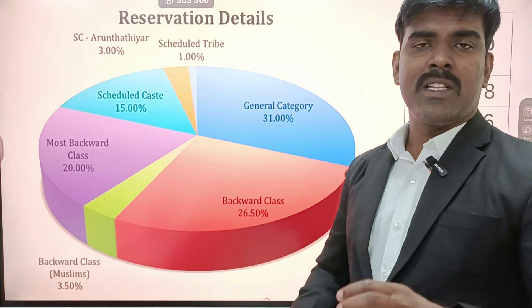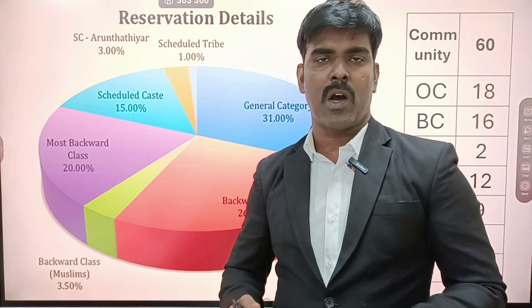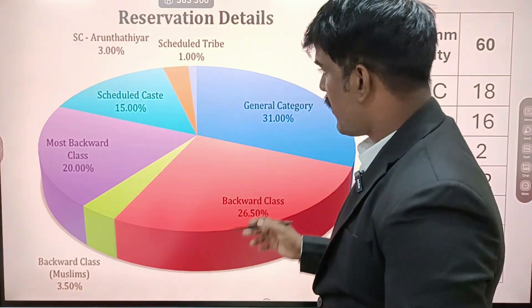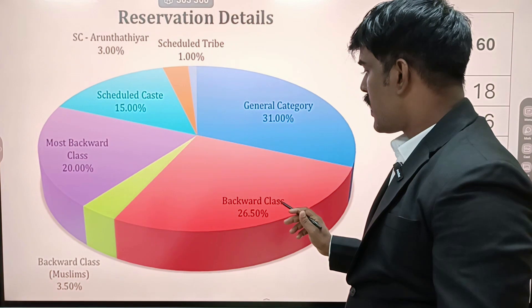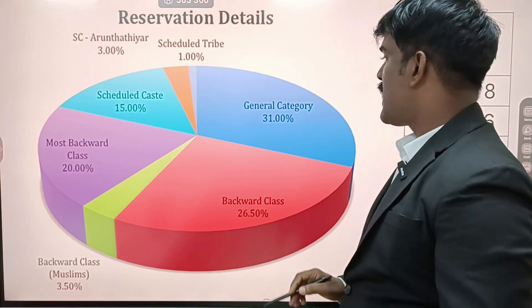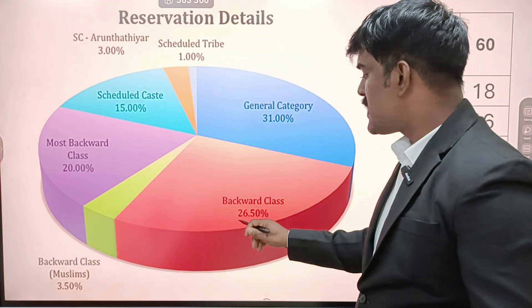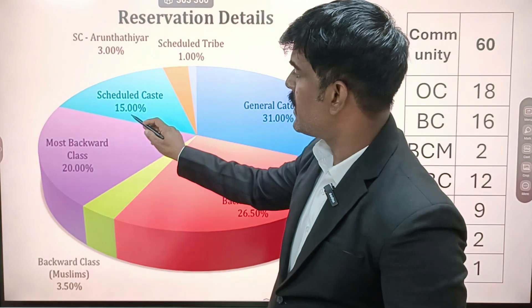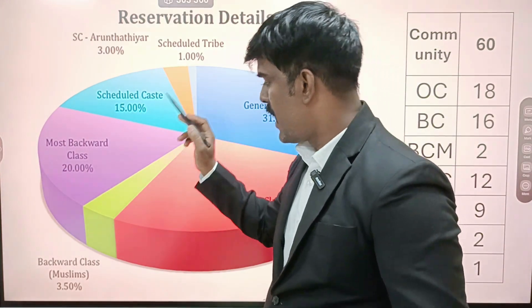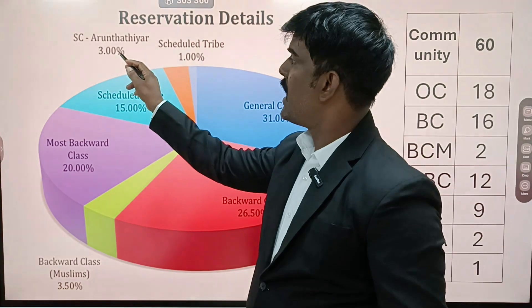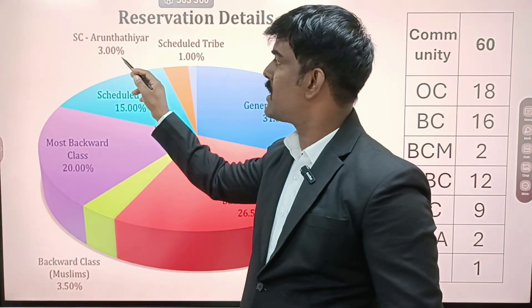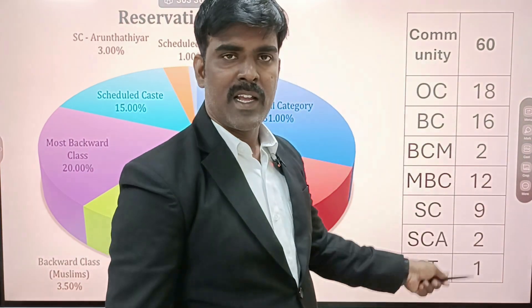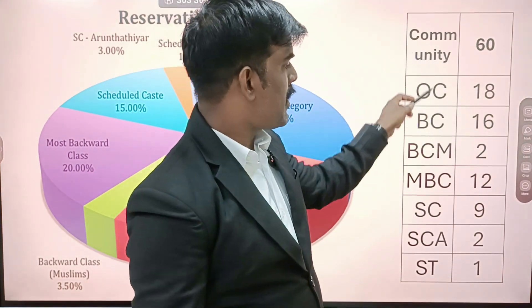So this community still has confusion about how they are splitting up the seats for the respective community. For example, if there are 100 seats, you can go to the general category for the OC community. If you go to the BC community, if you go to the MBC, it is scheduled to 15 percentage.